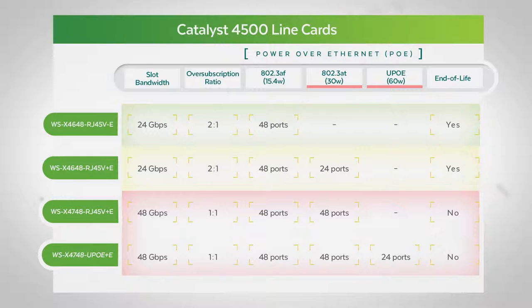In fact, all but one offer 802.3AT, which is 30 watts, or UPoE, which is 60 watt capabilities. 15.4 watts of power over ethernet will handle every IP phone out there today, and IP phones are getting more efficient, not less.